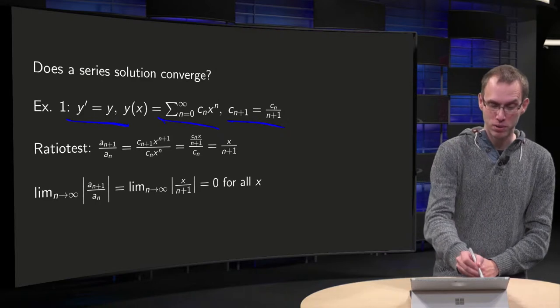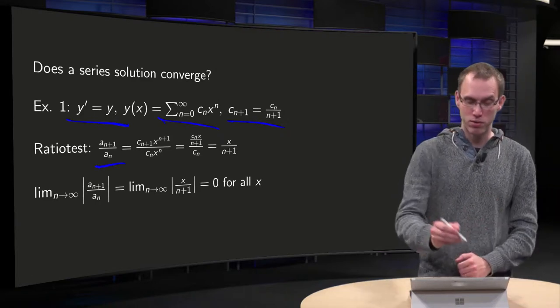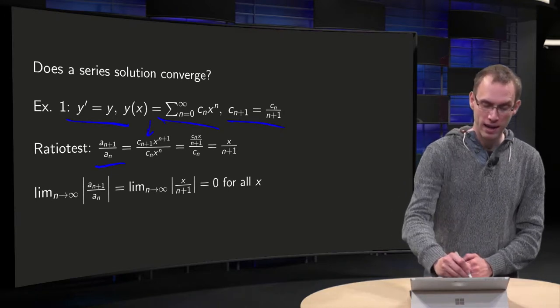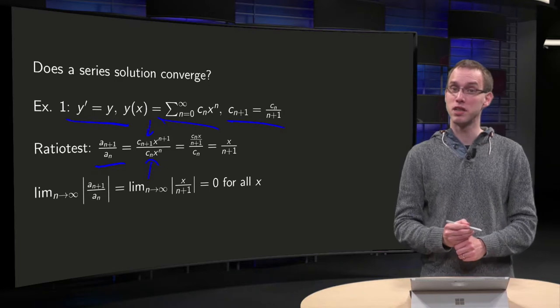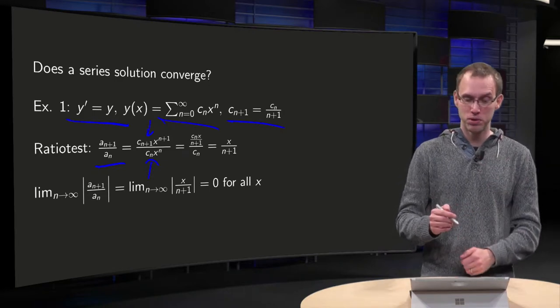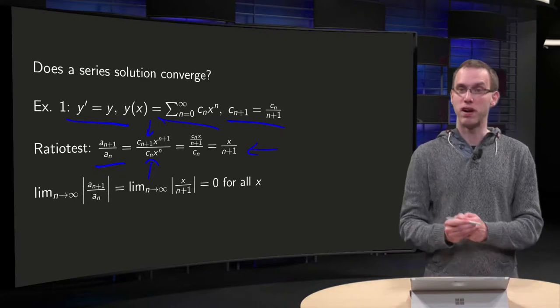So what is the ratio test? We compute an plus 1 divided by an. Well, an plus 1 equals cn plus 1 times x to the power n. And we have an explicit relation between the two, so we can plug that in. So we find x divided by n plus 1.